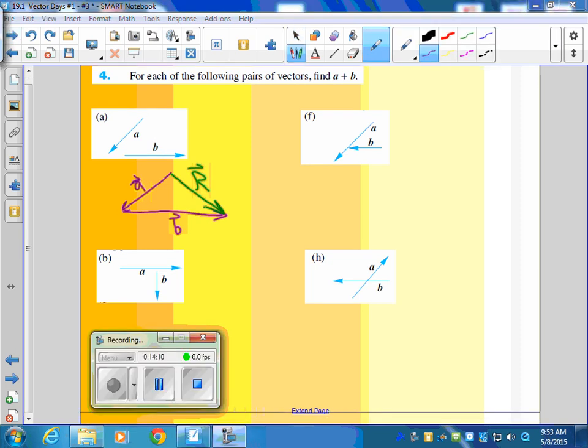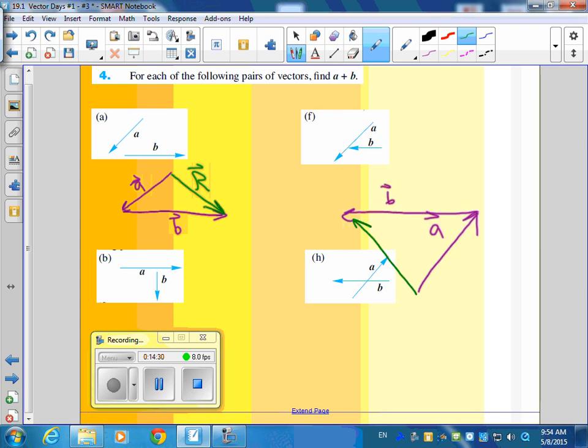I'll show you the answers to just two of them. Let's just do H here. You copy A, put a little half arrow on it, and then you copy B, which is head to tail, copy B. And then your resultant is from the tail of the first to the head of the last, and that's going to be your resultant. Which other one do you want to see? Do you want to see B here real quick? Here's A. Here's B. And here's your resultant. From the tail of the first to the head of the last. There's your resultant. Good.